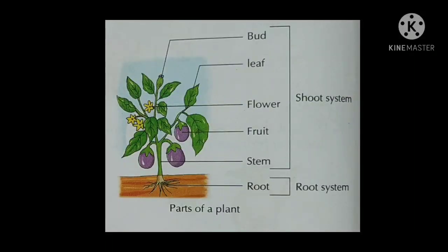Children, for the last question number 4, draw a well-labeled diagram of a plant. You will draw the diagram given in your textbook, label all the parts, and also show the shoot and the root system. Please remember to draw the diagram on the white page of your EVS notebook. Write these question answers neatly, draw the diagrams on the white page and learn them. Thank you.